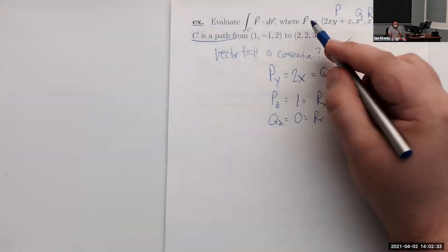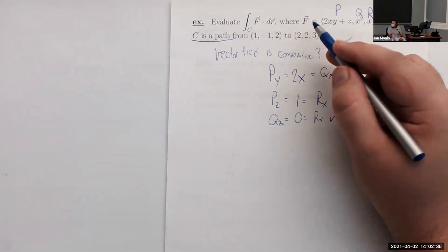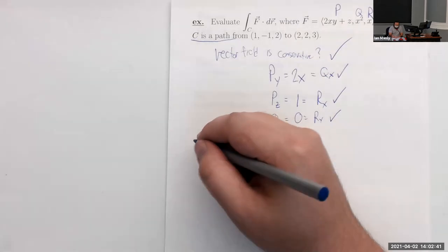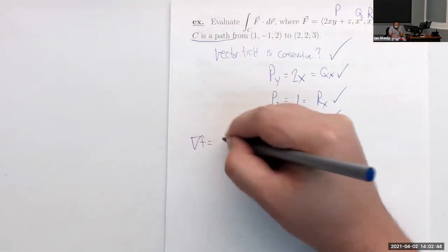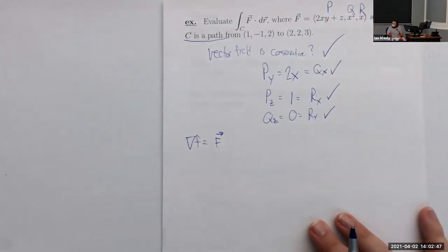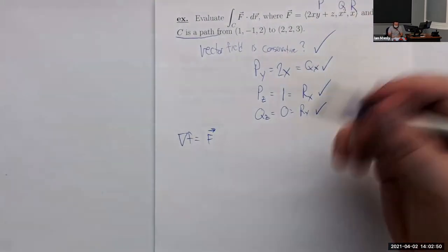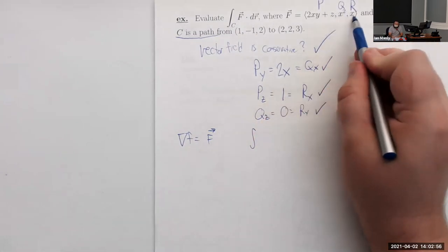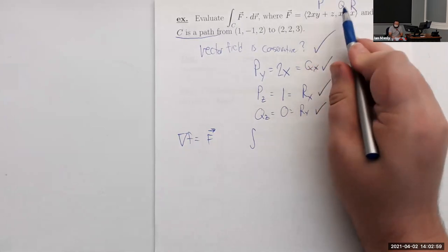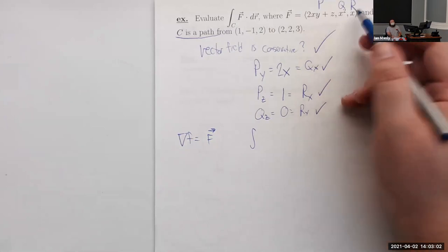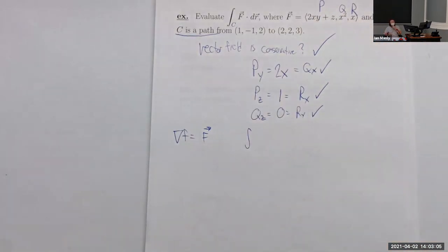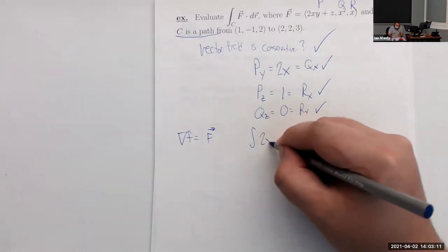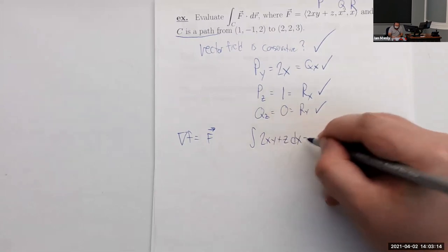This means we can write f as the gradient of some scalar-valued function f. To find the potential function, we integrate each component with respect to its matching variable: P with respect to x, Q with respect to y, and R with respect to z. Then we smash all the pieces together to get our potential function f.